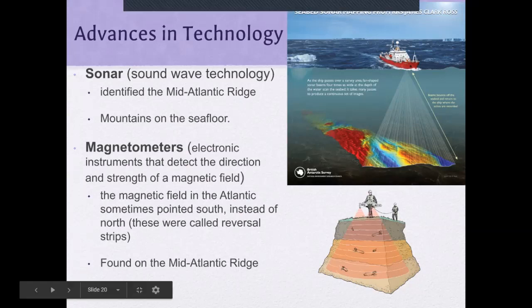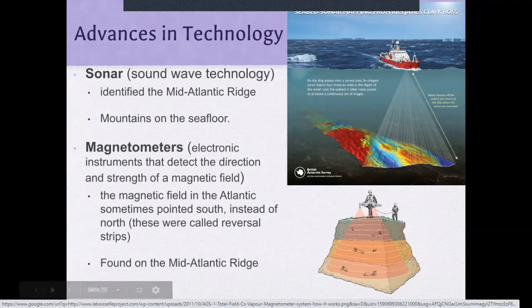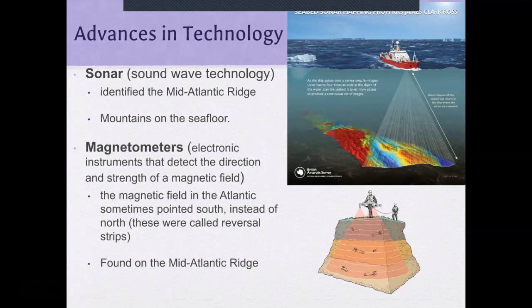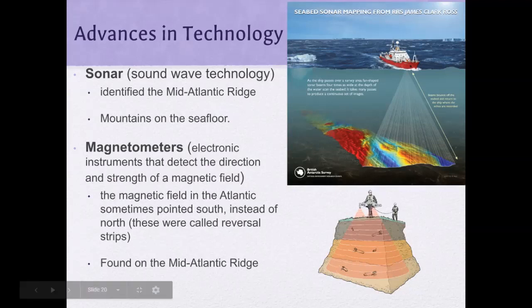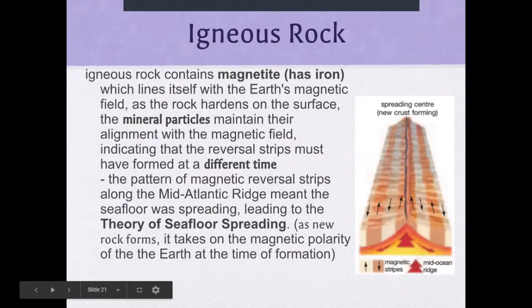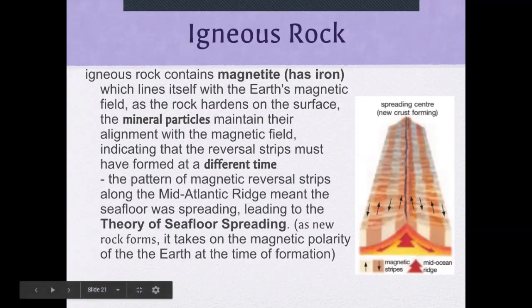These are called reversal strips, found at the mid-Atlantic Ridge. When boats mapped the bottom of the ocean, they found the magnetic fields pointed in different directions — which means that as volcanic activity created more ground and spread the plates apart, new magma filled the gap. The magnetometers showed the magnetic field pointing in different directions on either side of the mid-Atlantic Ridge, providing evidence for sea floor spreading.